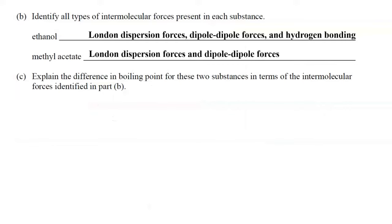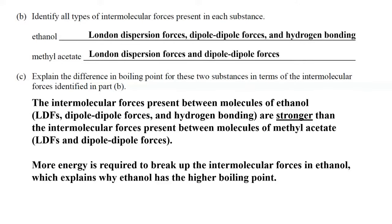In Part C, explain the difference in boiling point in terms of the intermolecular forces identified in Part B. Ethanol has a higher boiling point than methyl acetate. The intermolecular forces present between ethanol molecules — LDFs, dipole-dipole forces, and hydrogen bonding — are stronger than those between methyl acetate molecules — LDFs and dipole-dipole forces only. More energy is required to break up the intermolecular forces in ethanol, which explains why ethanol has the higher boiling point.